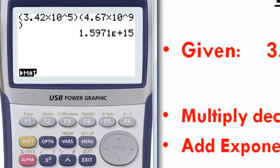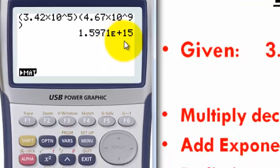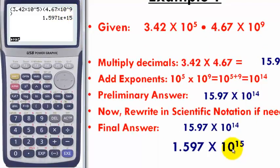Once I press EXE, we are going to get 1.5971 E raise to 15. This E raise to 15 means the exponent of our base 10 is 15. So we have 1.5971 times 10 raised to 15.